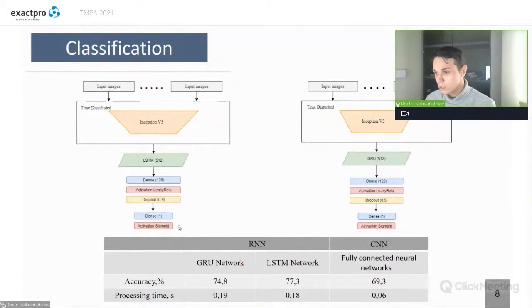So, as you can see here, we compare several recurrent neural networks, GRU and LSTM neural networks and fully connected neural networks. As you can see, accuracy of LSTM neural networks show best results and the other recurrent neural networks show good results in comparison with convolutional neural networks.